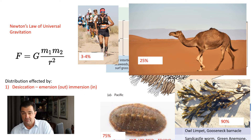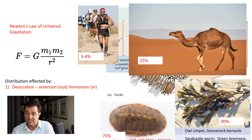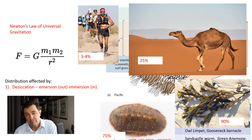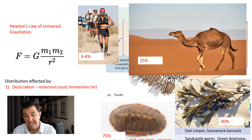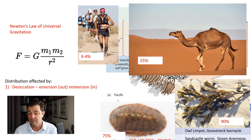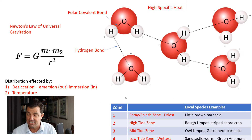Some animals are really capable of dealing with desiccation. Humans, for example, if we lose three to four percent of our body water, we're near the point of dying — we're not very good at desiccating. A camel can withstand 25 percent water loss, which is much better. But some chitins can withstand 75 percent, and some brown algae can withstand 90 percent desiccation — way better at dealing with that than many organisms.